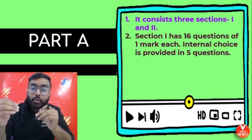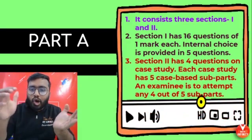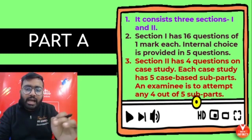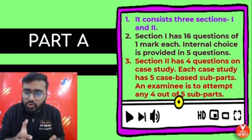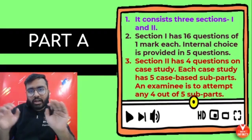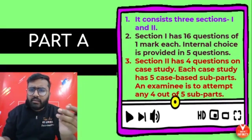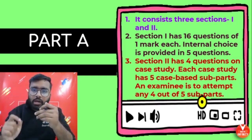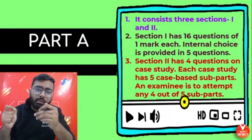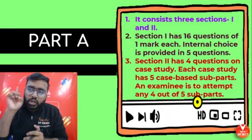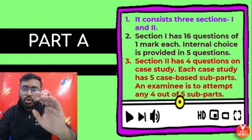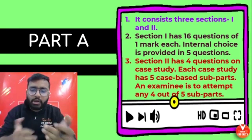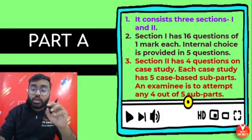Section 2 has 4 questions on case study. Each case study has 5 sub-parts, and you need to attempt 4 out of the 5. This is simple — go for the question you feel confident about, not the one that seems like a shortcut. So Section 1 has 16 questions and Section 2 has 4 questions, making Part A a total of 20 questions.